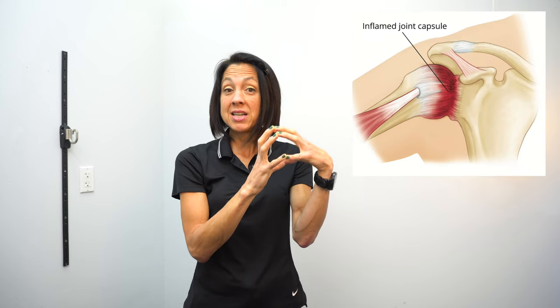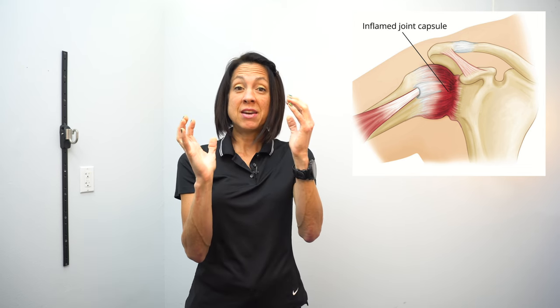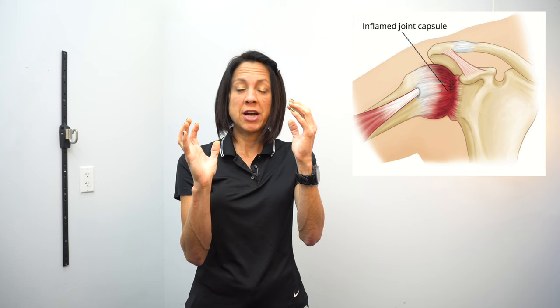Adhesive capsulitis, or frozen shoulder, is when that capsule becomes inflamed, thickens, and becomes stiff. I visualize it like shrink wrap — if you heated shrink wrap, it would pull in. It just doesn't leave enough space between the ball and the cup for that arm bone to glide as nicely in that socket. Or maybe it glides, but it is painful, because the capsule is just too short. Those are the key structures, and that's what adhesive capsulitis is.